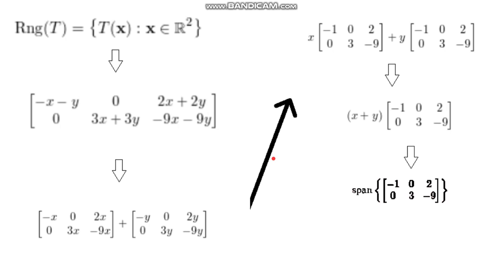So, now, we can say that the range of T is equal to the set of T of x, where x is an element of real numbers squared. Here, we just want to use the matrix at the very beginning that we were given.